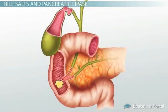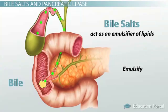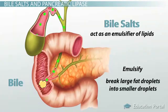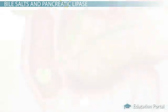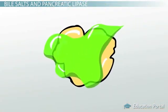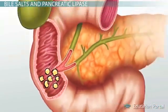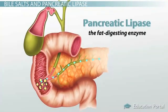These globs remain until bile, produced in the liver and stored in the gallbladder, mixes with the large fat droplets. Bile contains bile salts, which act as an emulsifier of lipids. The term emulsify means to break large fat droplets into smaller droplets, and that is exactly what we see happening here in the small intestine. The bile salts break up and coat the fat to form much finer droplets with more surface area, which aids digestion because the fat-digesting enzyme, pancreatic lipase, can only act on the surface of the fat droplet.